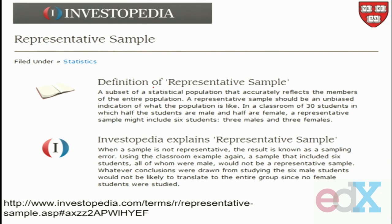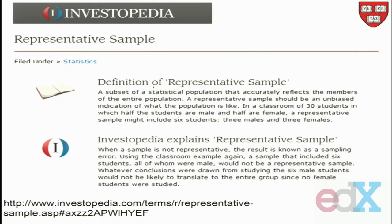They say it's a subset of a statistical population that accurately reflects the members of the entire population. The example they give is: in a classroom of 30 students in which half are male and half are female, a representative sample might include six students — three males and three females. I suspect they mean it should include three males and three females, because that would be representative of the population of 30 students, since half were male and half were female.